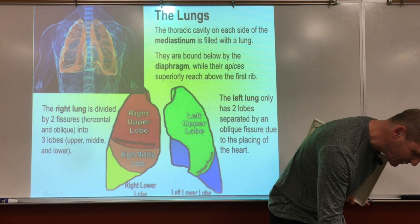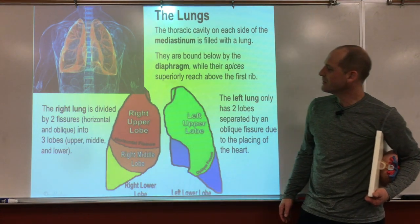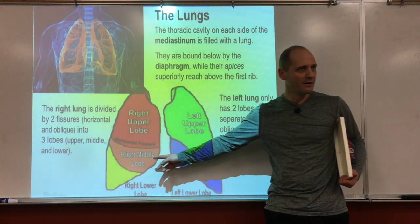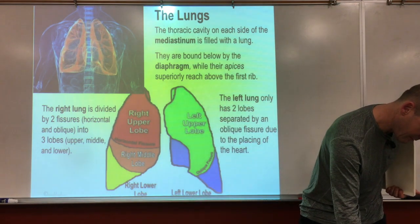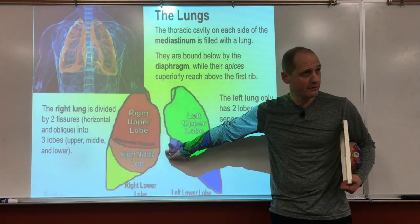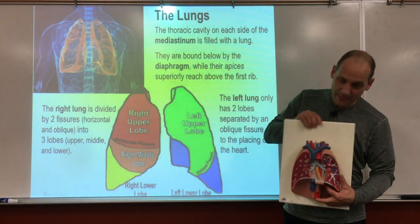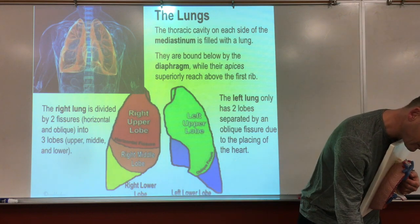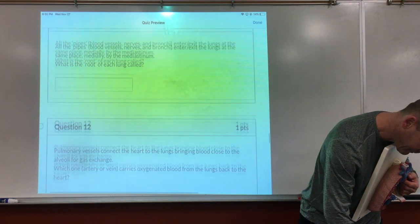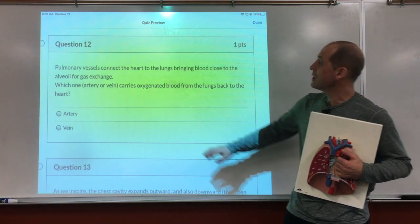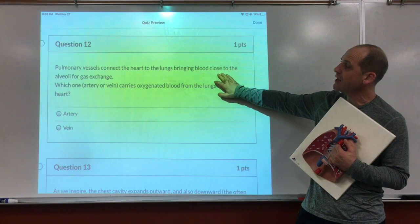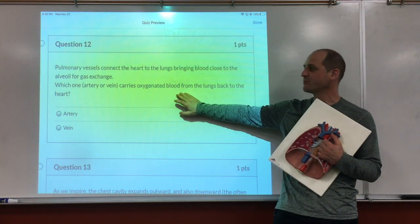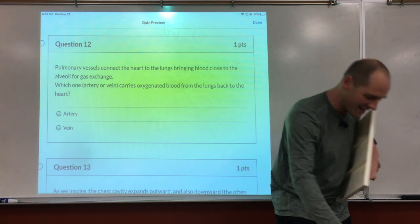The right lung has three lobes and the left lung has two lobes. Why? The heart sits on the left side and needs more space. Pulmonary vessels connect the heart to the lungs, bringing blood close to the alveoli for gas exchange. Which vessel — artery or vein — carries oxygenated blood from the lungs back to the heart? A vein — because a vein brings blood toward the heart.